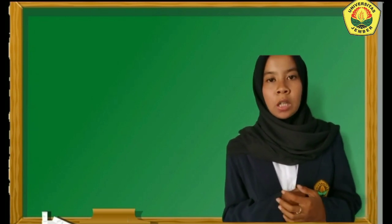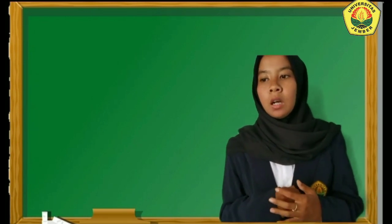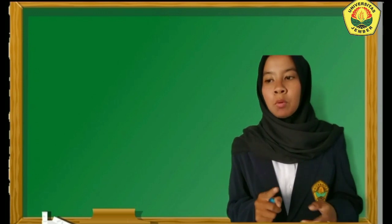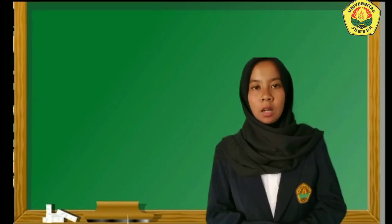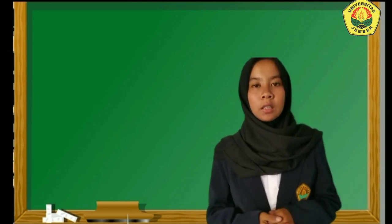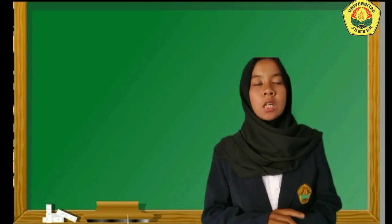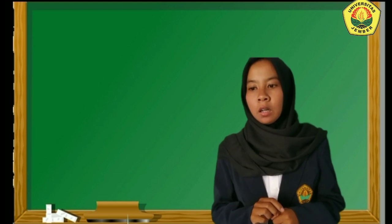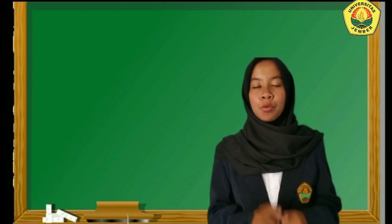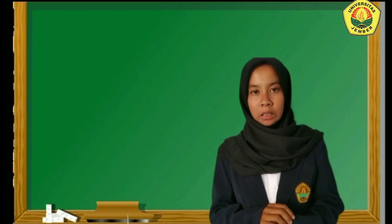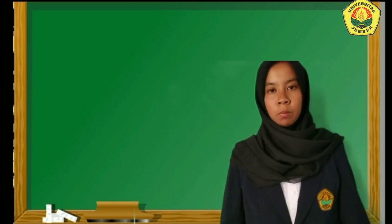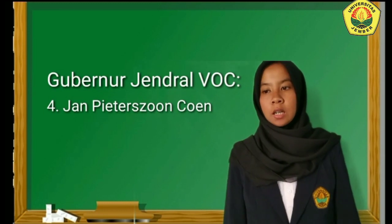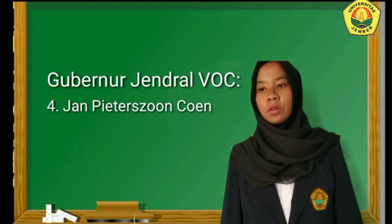Akhirnya pada tahun 1618, Sultan Banten dibantu oleh tentara Inggris di bawah pimpinan Laksamana Thomas Dale berhasil mengusir VOC dari Jayakarta. Setelah VOC berhasil disingkirkan dari Jayakarta, justru Inggris disingkirkan dari Jayakarta oleh pasukan Banten. Dan akhirnya Jayakarta sepenuhnya dapat diambil alih oleh Kesultanan Banten. Pada tahun 1619, Gubernur Jenderal VOC Lawrence Reael digantikan oleh Gubernur Jenderal baru, yaitu Jan Pieterszoon Coen atau JP Coen.